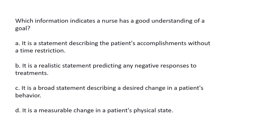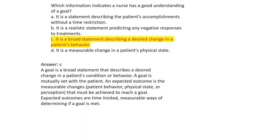Which information indicates a nurse has a good understanding of a goal? A. It is a statement describing the patient's accomplishments without a time restriction. B. It is a realistic statement predicting any negative responses to treatments. C. It is a broad statement describing a desired change in a patient's behavior. D. It is a measurable change in a patient's physical state. Answer C: A goal is a broad statement describing a desired change in a patient's condition or behavior, mutually set with the patient. An expected outcome is the measurable, time-limited change in behavior, physical state, or perception needed to reach a goal.